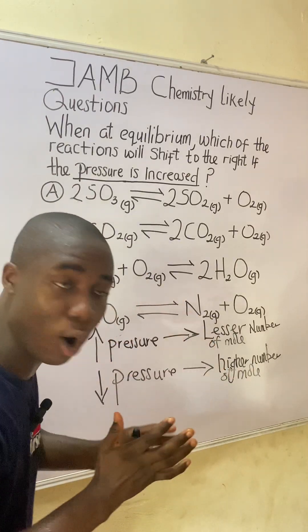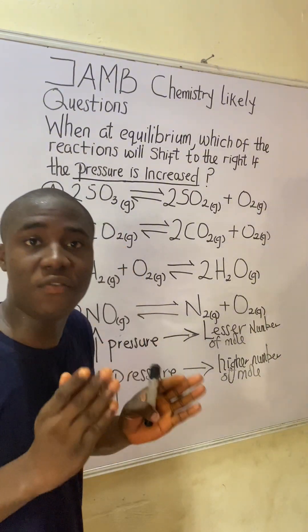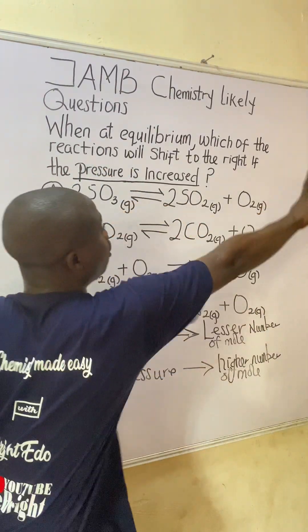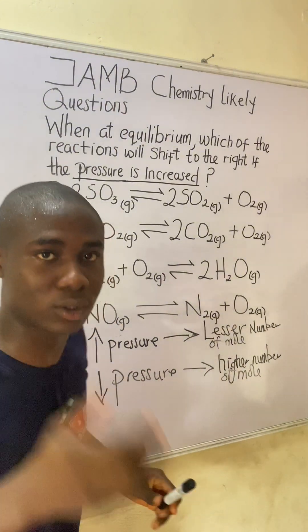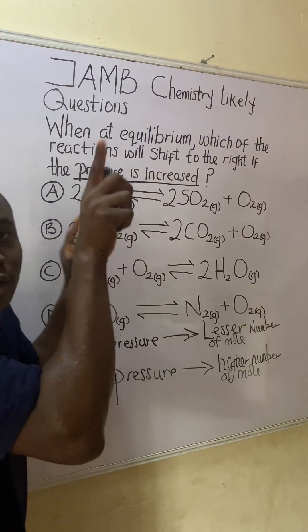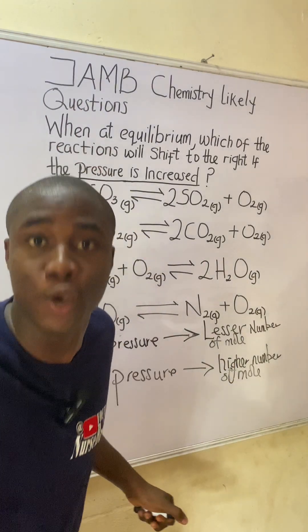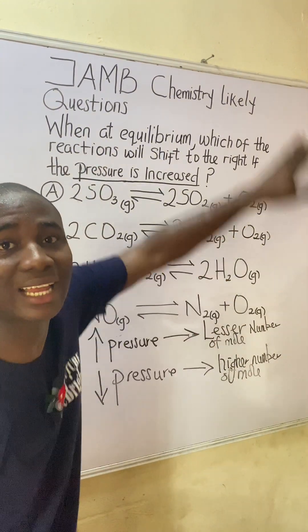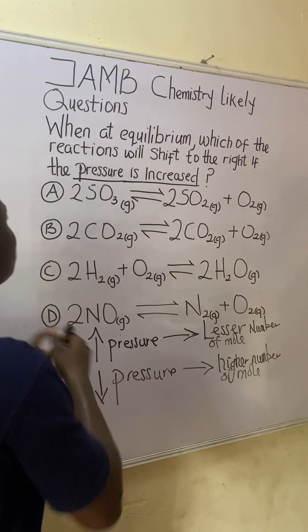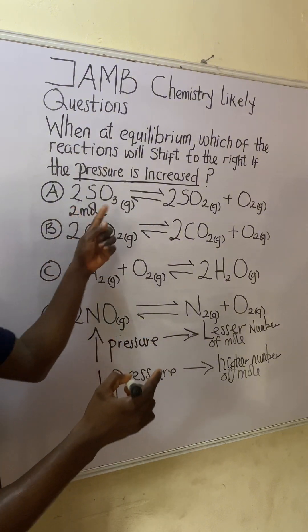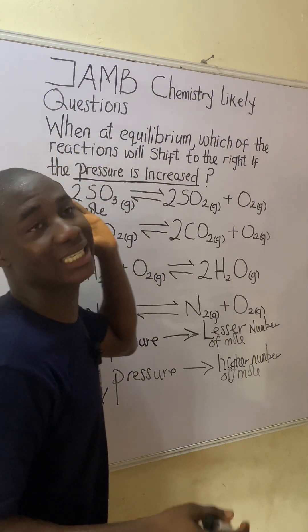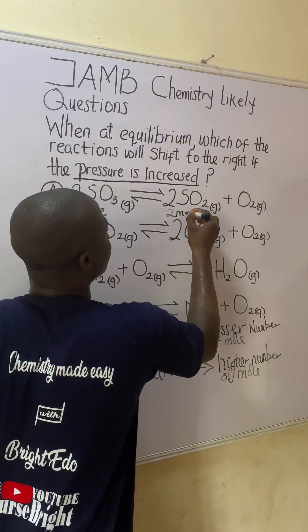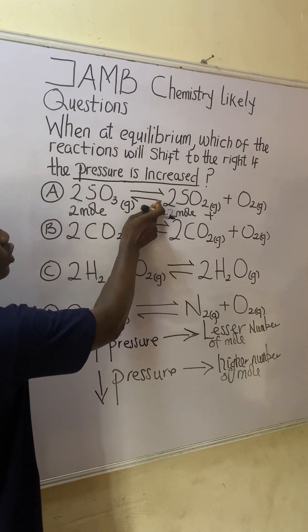Since we've built our knowledge up to this point, let us go to our options and apply what we've said to solve and get the answer. Let us calculate the number of moles on each reaction side — both products and reactants — for all options. For option A, on the left side I can count two moles for the reactant. Remember: the left-hand side of a reaction is the reactant, and the right-hand side is the product.